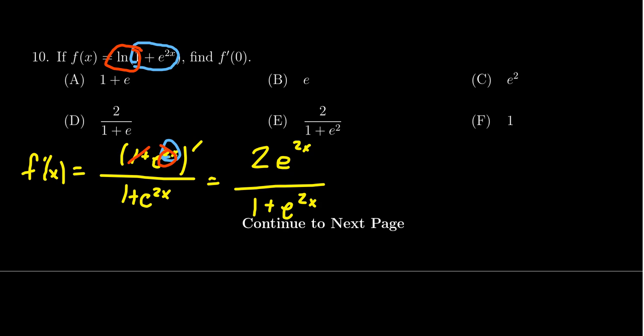This is our derivative. Now, you'll notice that's not there because we're not looking for the derivative. We need to know the derivative at x equals 0. So if we plug in 0 to find the number we're looking for,